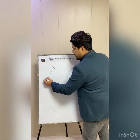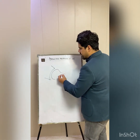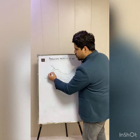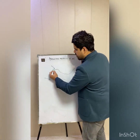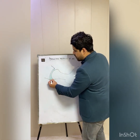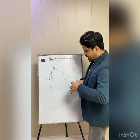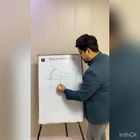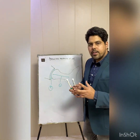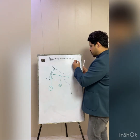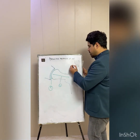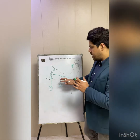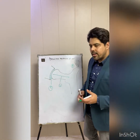Here we have the acetabulum, the femoral head and neck, the trochanter, and the shaft. The hip joint constitutes the fulcrum, the neck of the femur constitutes the lever arm, and the greater trochanter along with the abductor muscles comprises the power.